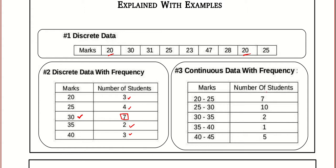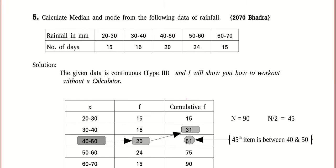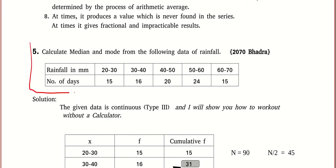In Type 3 grouped continuous data, it is not as easy. We go for the formula learned in class 10 or 12. The most repeated value lies between 25 and 30, so approximately the mode will be something like 27.5. But there is a correction factor — that is just the approximate value. If you write just the approximate value they won't give you marks, but it helps to understand that the mode will be somewhere near 27.5.